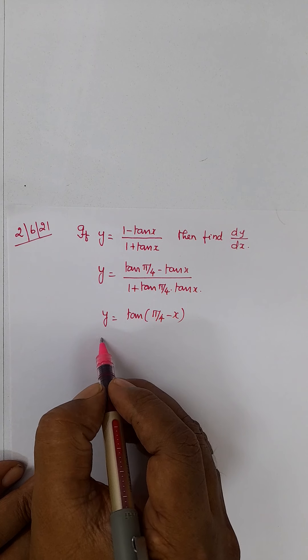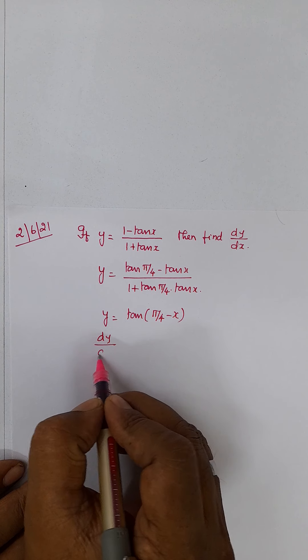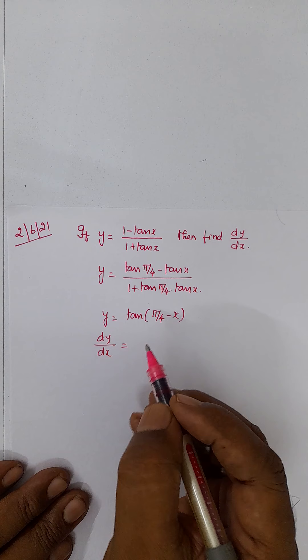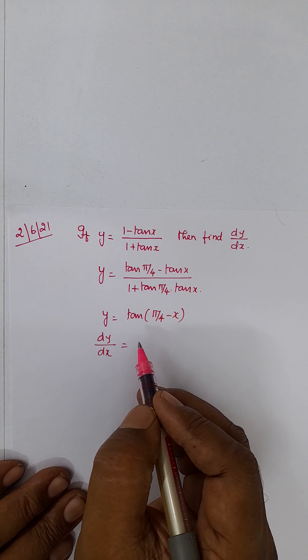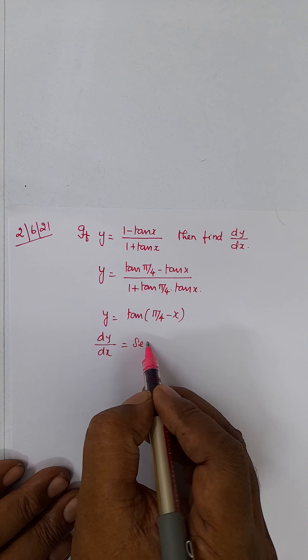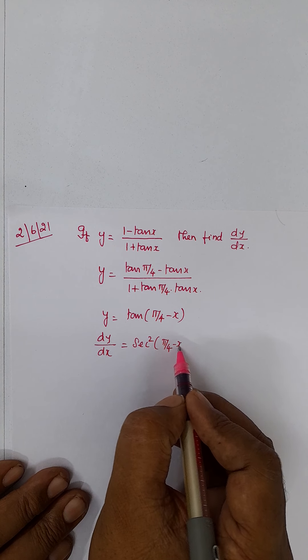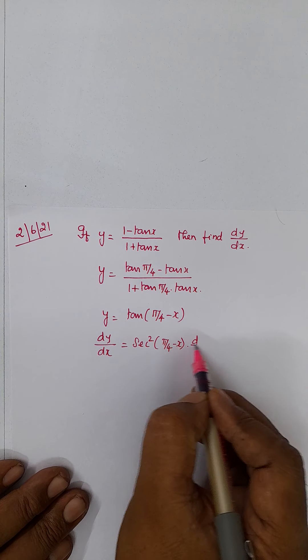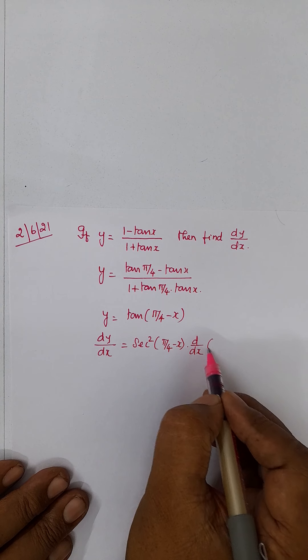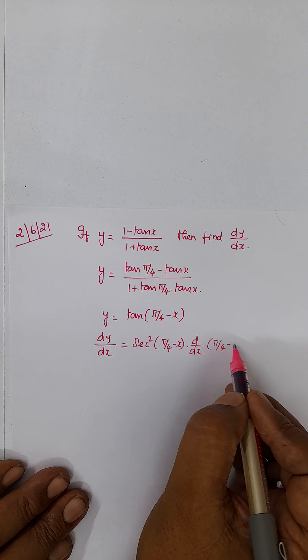Now, it is very easy to differentiate. So, find dy by dx is equal to differentiation of tan x is nothing but secant squared. So, secant squared of pi by 4 minus x into d by dx of pi by 4 minus x.